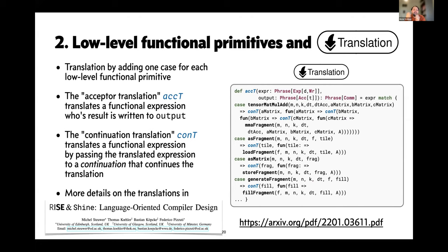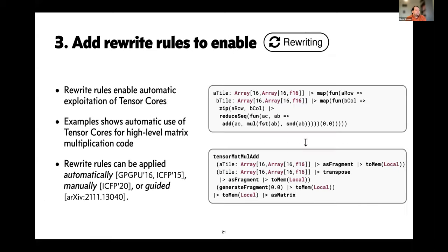For doing the translation between these two layers, we extend the existing translation infrastructure that we have in RISE. There are two functions that perform this translation: one is called an acceptor translation, the other continuation translation. There are more details in the paper that I've shown before, but the key message here is that we have an existing translation where we essentially just add an additional case for each of the functional primitives. You see this on the right-hand side: for example, we translate the S fragment functional primitive into the load fragment function in the imperative primitives. The tensor MatMult add will directly be translated into this MMA fragment step.